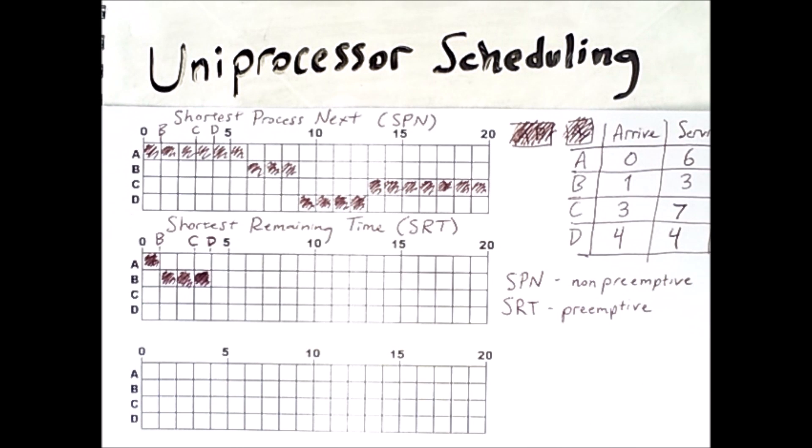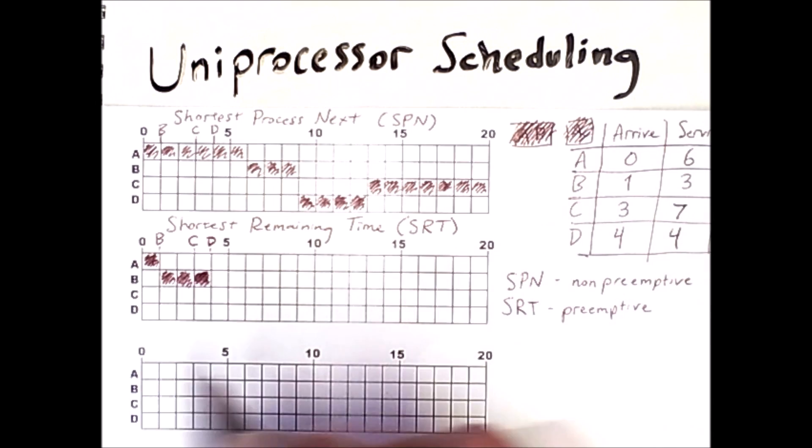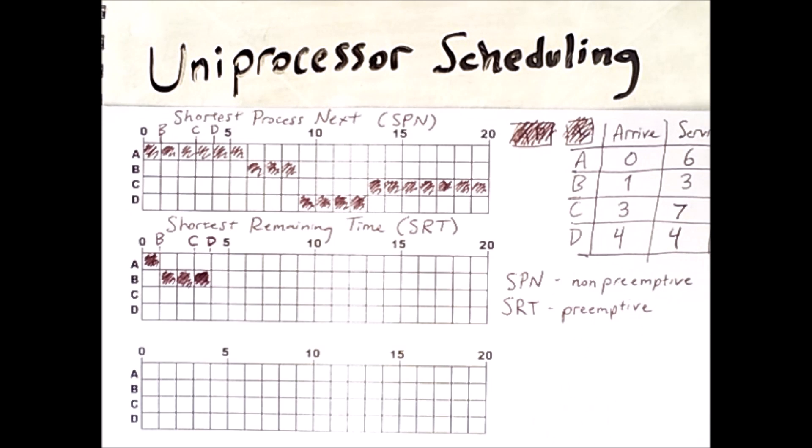So at this point B is finished, C has seven units to run, D has four units to run, and A has five units to run. Remember it's only used one of its six. So D actually has the shortest remaining time at this point and will get to run.